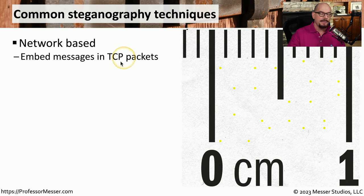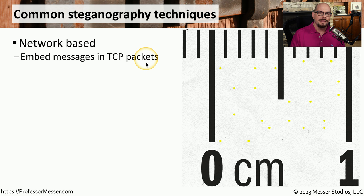For example, you can hide information within network traffic and embed messages within TCP packets that you're sending across the network. This data is sent a few bits or bytes at a time, and if you know how the data is being sent, you can reconstruct that data on the other side.